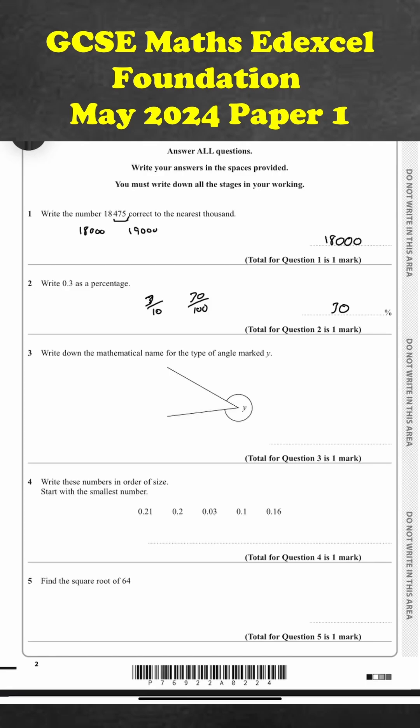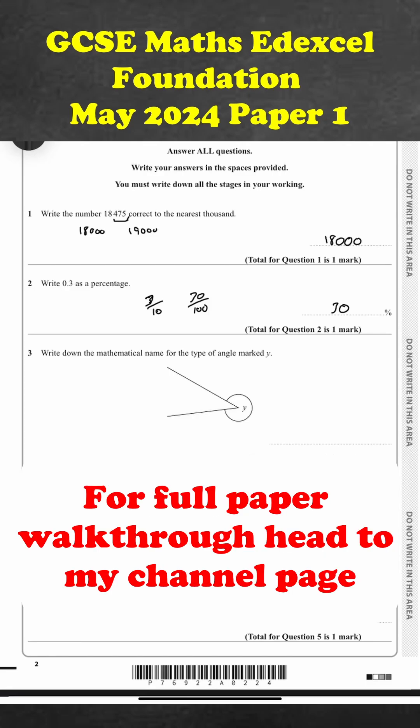Question three. Write down the mathematical name for the type of angle marked Y. This angle is greater than 180 degrees, so this is going to be a reflex angle.